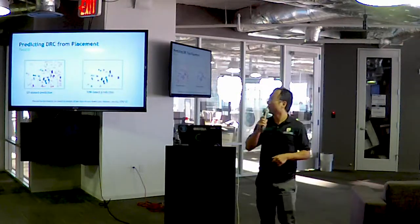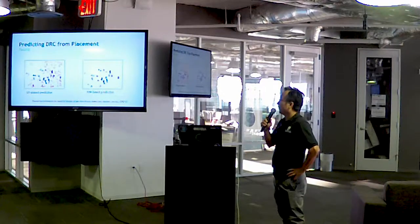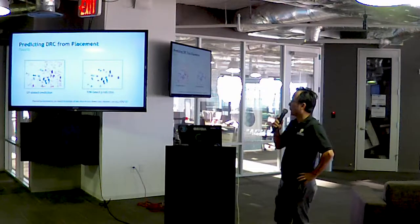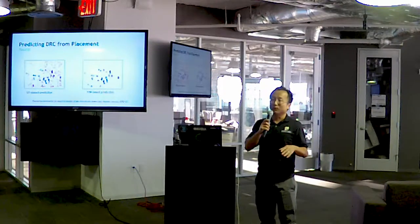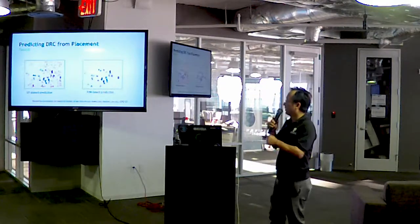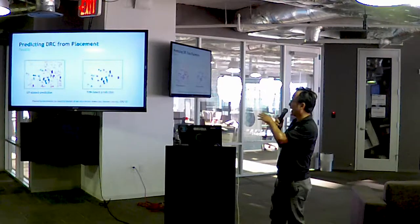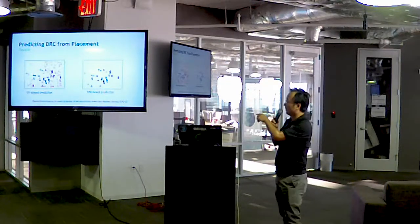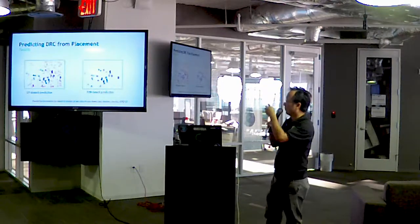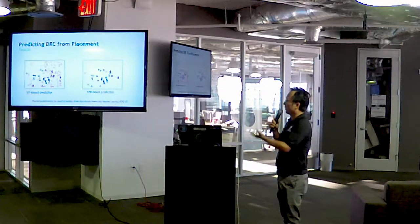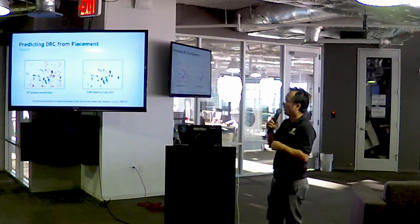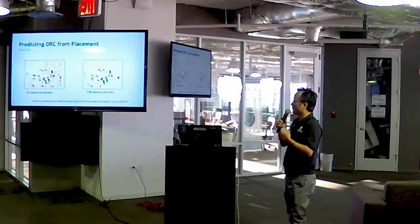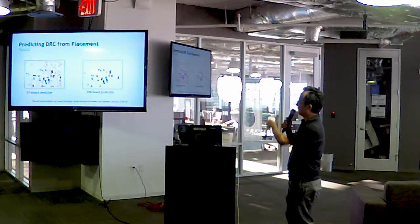Here are the results. On the left, it's comparing global routing-based prediction versus SVM-based prediction. There are simple global routing algorithms that can predict routing congestion — the red dots are spots predicted by global routing, and the blue dots are the real DRC errors. Global routing doesn't give a very good prediction because the red and blue dots don't match. However, using the SVM-based approach — looking at features in nearby windows to predict DRCs — the predictions are much closer and more accurate.